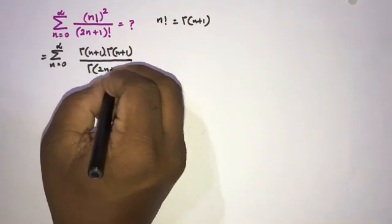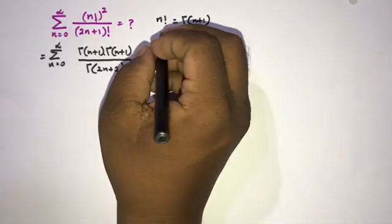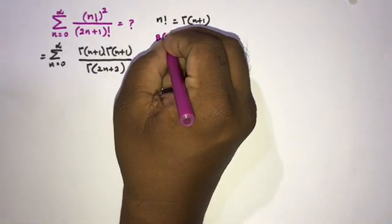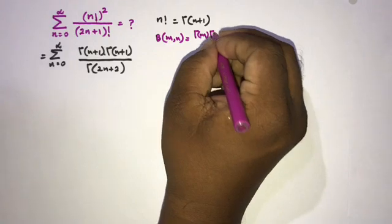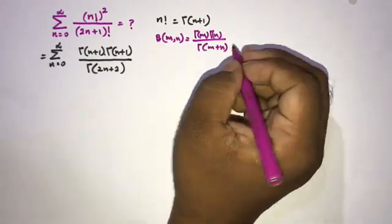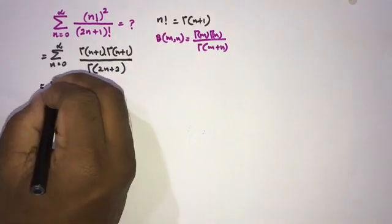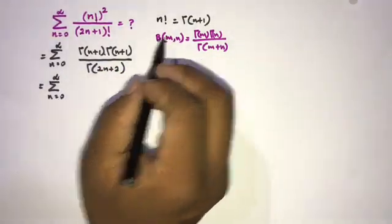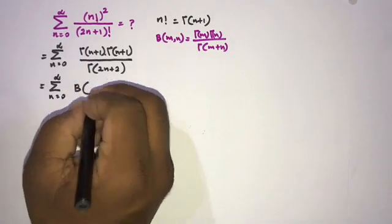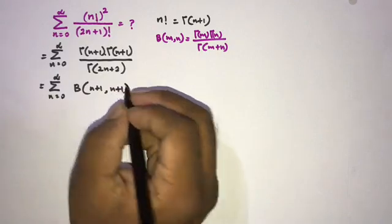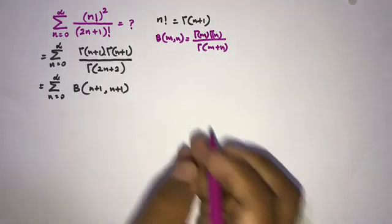Instead of (2n+1) factorial we use the gamma function: gamma of 2n plus 2. We know the beta function: beta(m, n) equals gamma(m) times gamma(n) over gamma(m plus n). Taking m equals n plus 1, we can write this as beta(n+1, n+1).